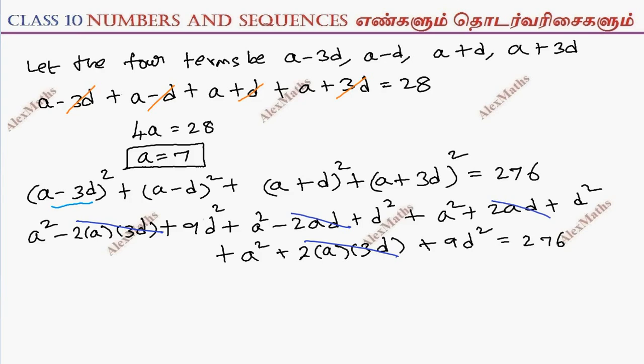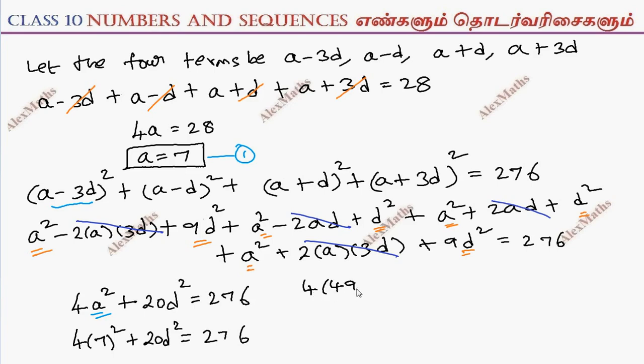Further simplification: four a squares, so this is 4a square plus 9d square plus d square plus d square plus 9d square equals 276. That's 4a square plus 20d square equals 276.